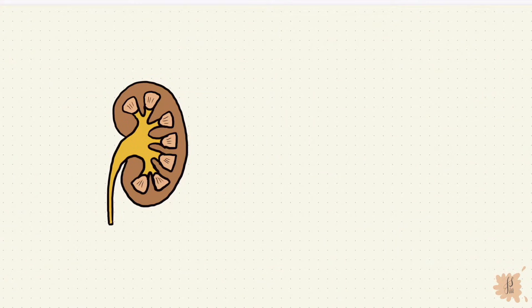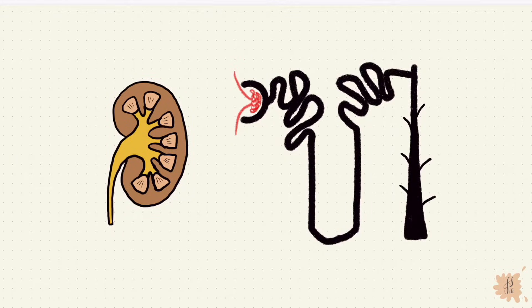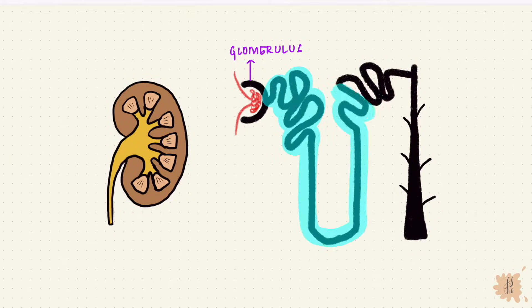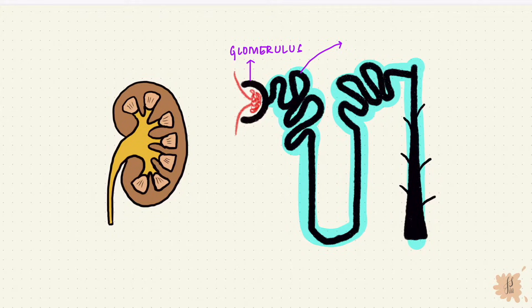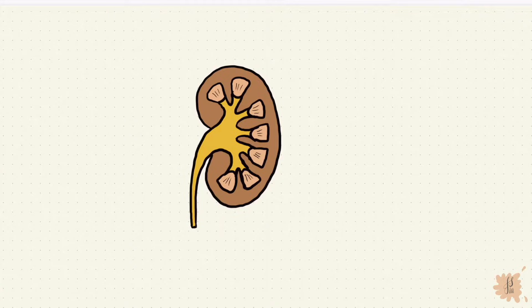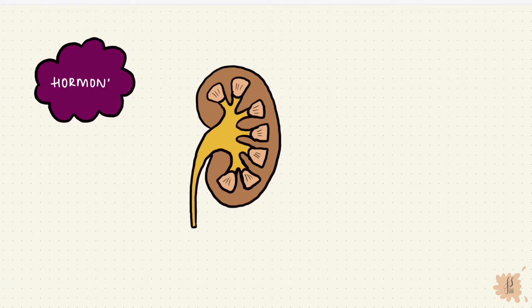The kidney has millions of nephrons and each nephron has a glomerulus and a renal tubule. The first part of the tubule is the proximal convoluted tubule, followed by the loop of Henle, the distal convoluted tubule, and the collecting duct. Though the kidney itself has endocrine functions, there are hormones produced both by the kidney and elsewhere that can have effects on it.